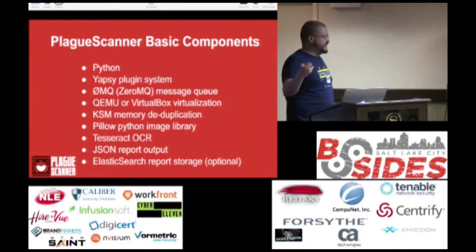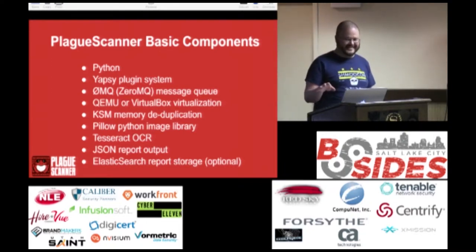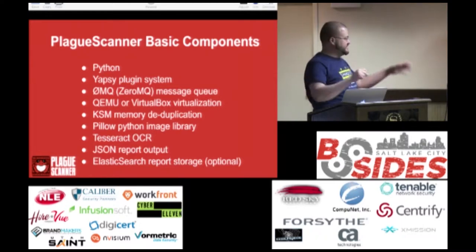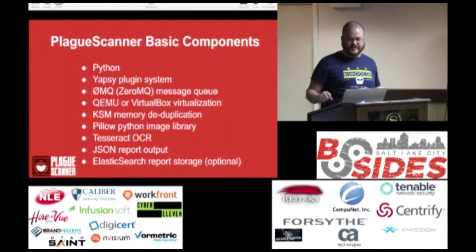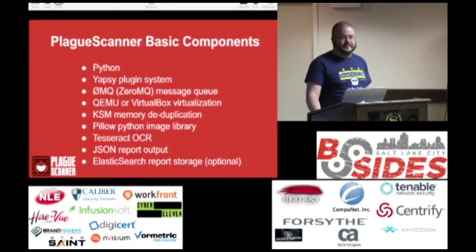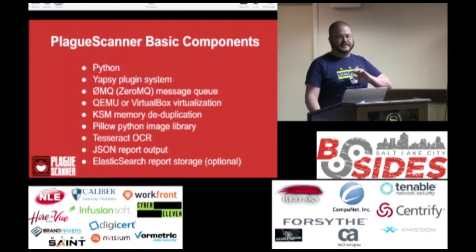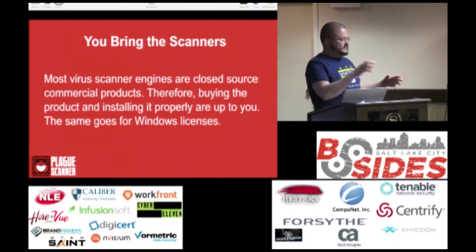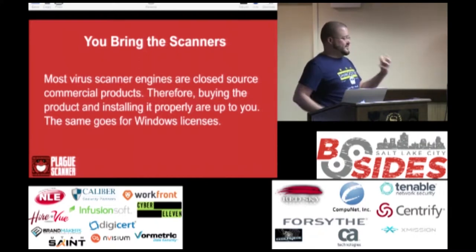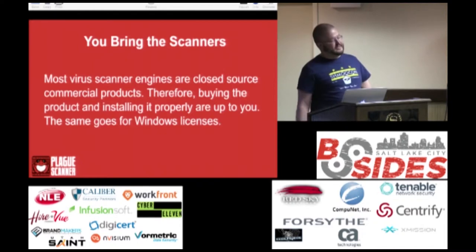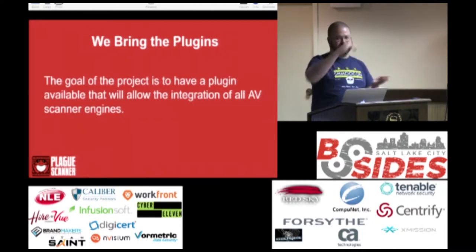The report output is JSON — I don't like XML, XML is very last year. The reports can optionally be stored in Elasticsearch, and you can do nice graph stuff and look at historical AV engine results. The whole concept is that you bring the scanners — it's up to you to buy the licenses and get them installed correctly. I bring the plugins for each scanner. Essentially the core is a set of regexes that takes the output from each AV scanner, pulls out the data we need, and sends all of that to a central core to create a master JSON file.